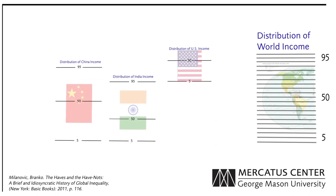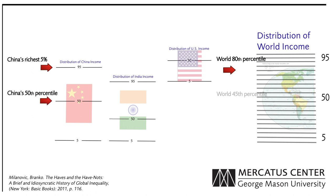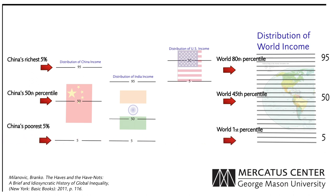China's income distribution, by contrast, is much broader. It includes some of the world's highest income and some of its lowest income households. Those in the top 5% of earners in China earn more than 80% of global households, while the median Chinese household earns more than 45% of global households. And the bottom 5% of Chinese households are among the world's lowest income earners.